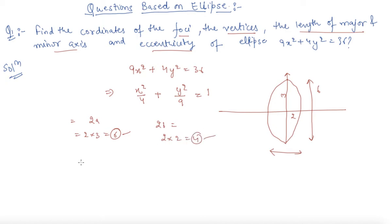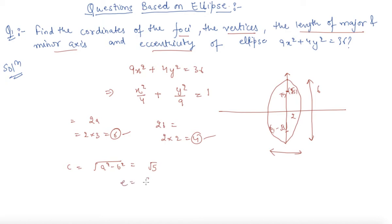Now we will find out the coordinates of the foci, which are (0, c) and (0, −c). We find the value of c from √(a² − b²) = √(9 − 4) = √5. So the foci are (0, √5) and (0, −√5). To find out the eccentricity, e = c / a = √5 / 3.